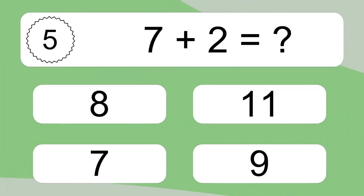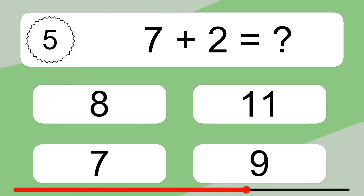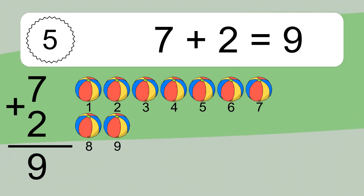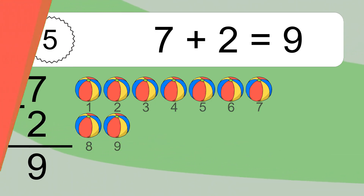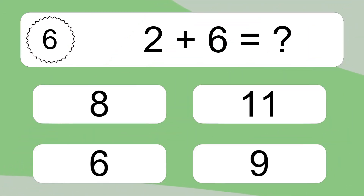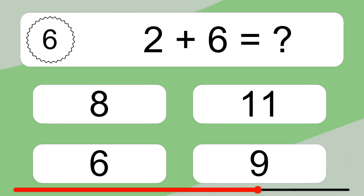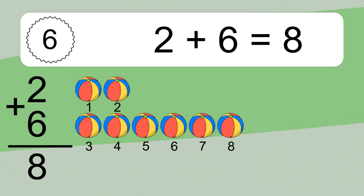Seven plus two equals nine. Let's count it: one, two, three, four, five, six, seven, eight, nine. Two plus six equals what? Two plus six equals eight.